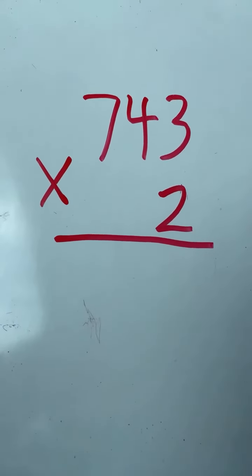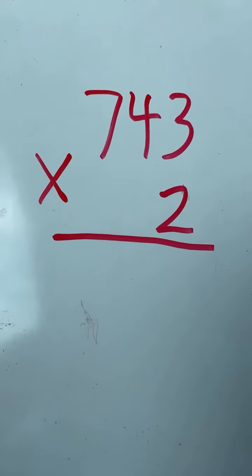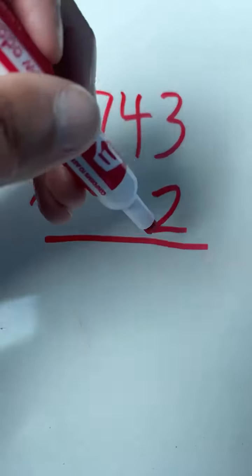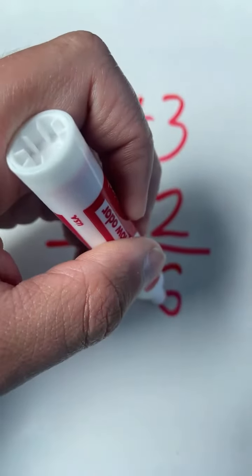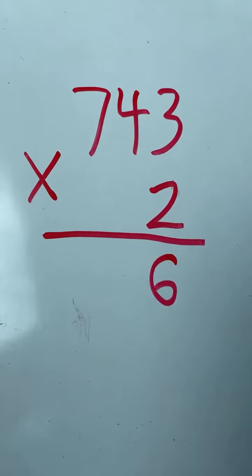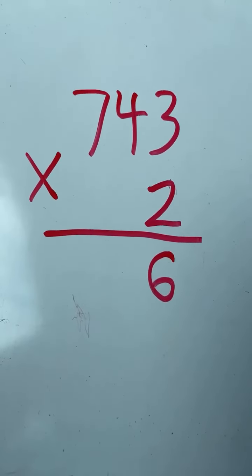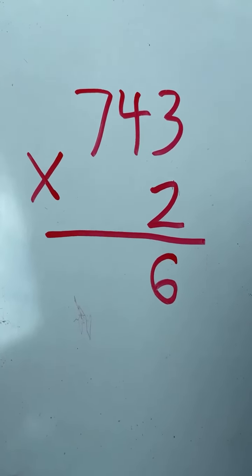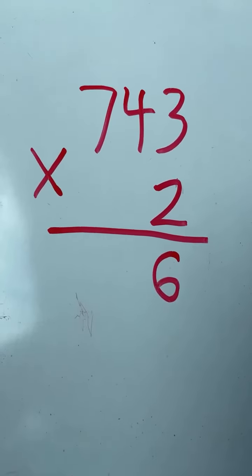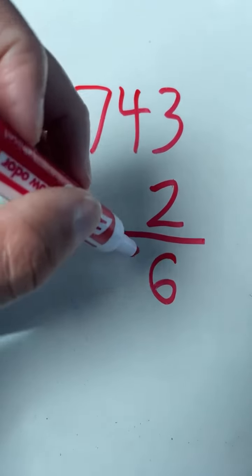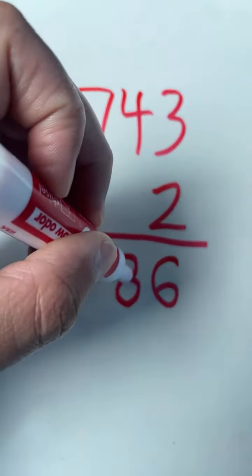For example, 743 times 2. We start in the 1's place: 3 times 2 equals 6. We do not need to regroup in the 1's place because our product is less than 10. We only regroup if our product is 10 or more. Next, 4 times 2 equals 8. Again, no regrouping is needed.